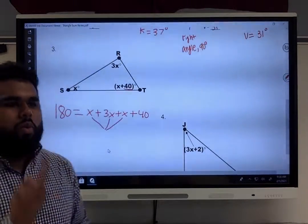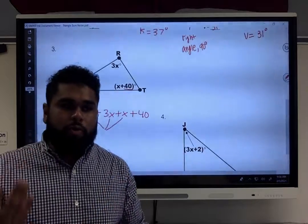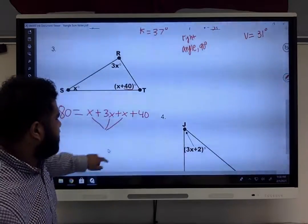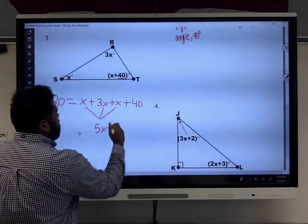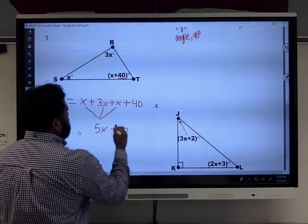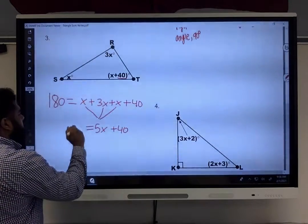We'll set that back equal to 180. Now, I want to solve for X, but I have two things in the way. I have to get rid of this 5 and this 40.